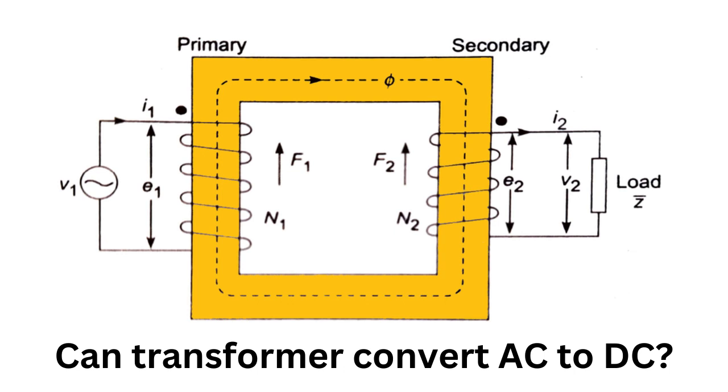The current in the primary coil and the secondary coil are both alternating, and therefore cannot be considered as direct current.